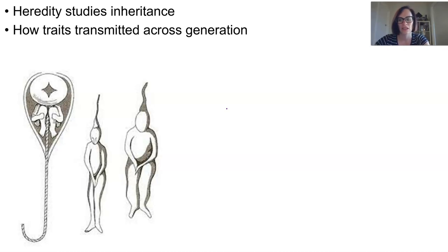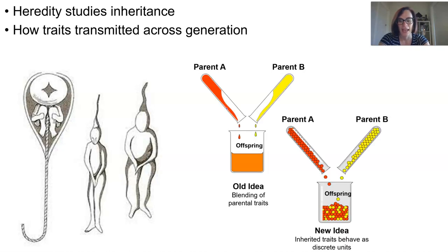So everything needed to form an entire human was found in the sperm cell. Now once more scientists started to learn about embryology and genetics and gametes and all those kinds of things, these ideas were thrown out.